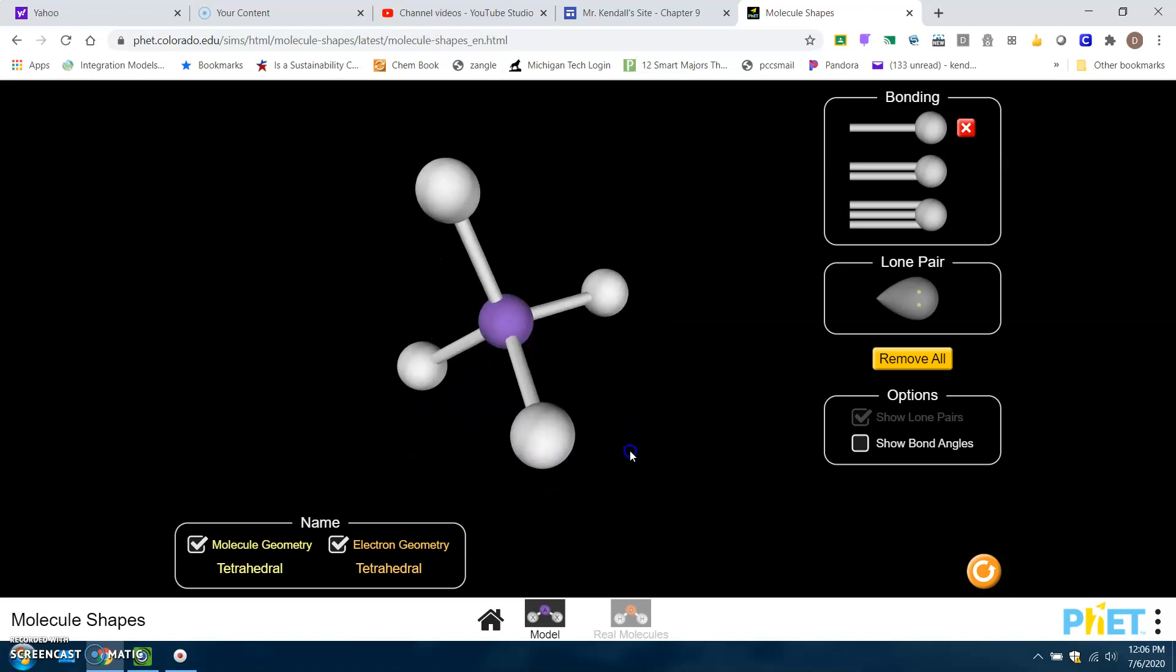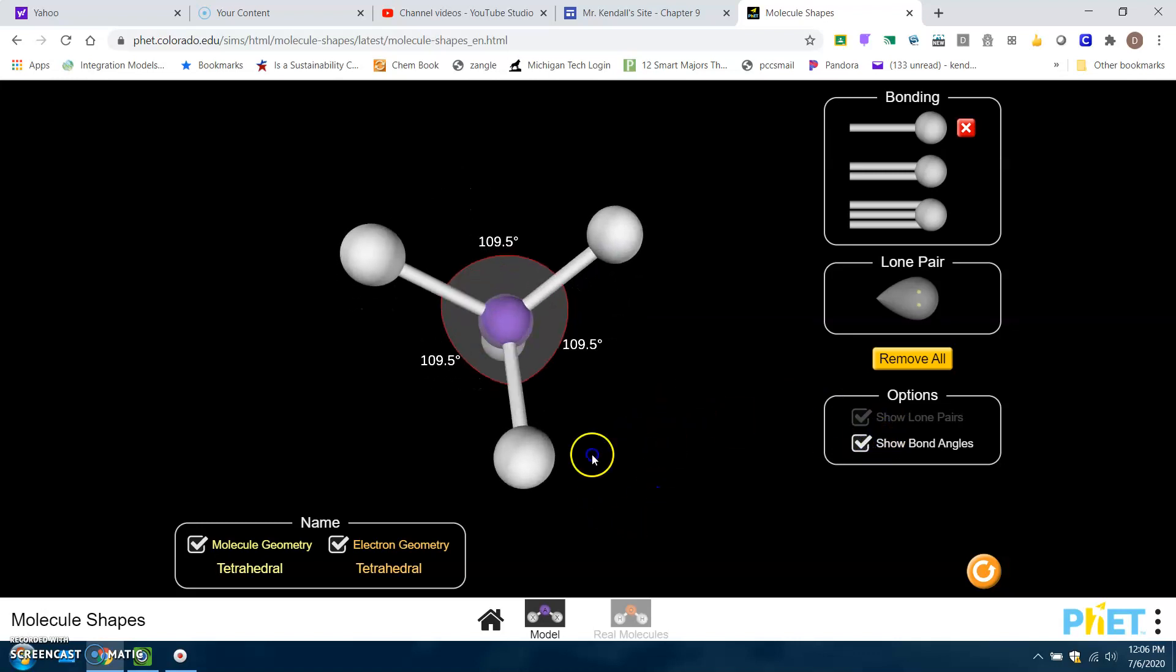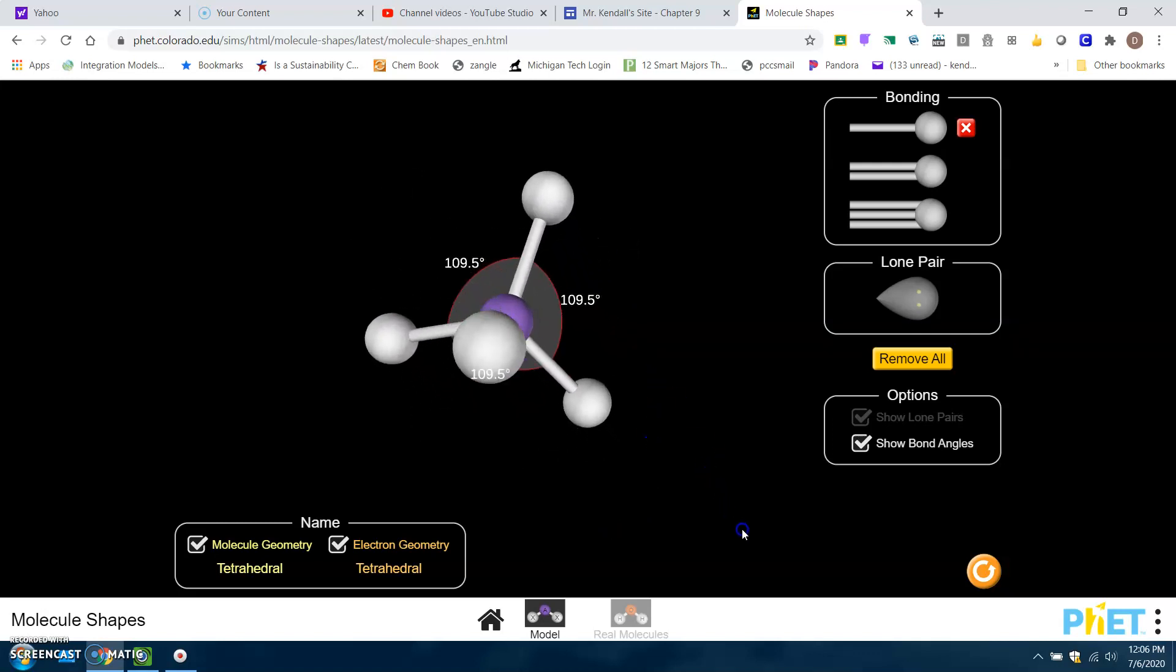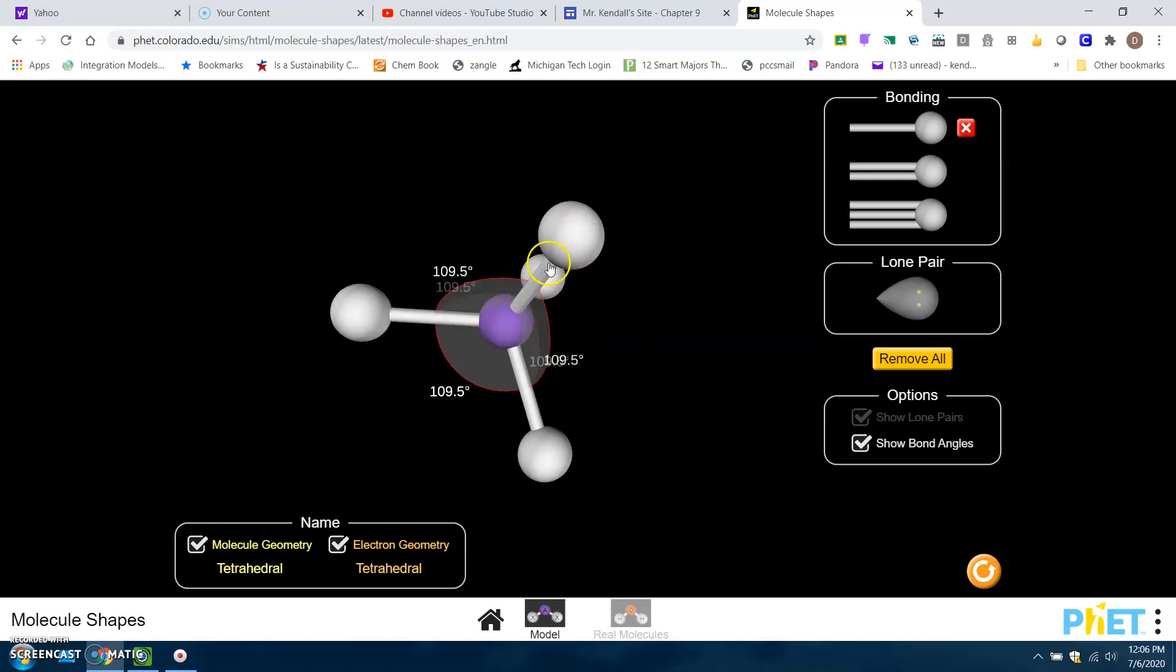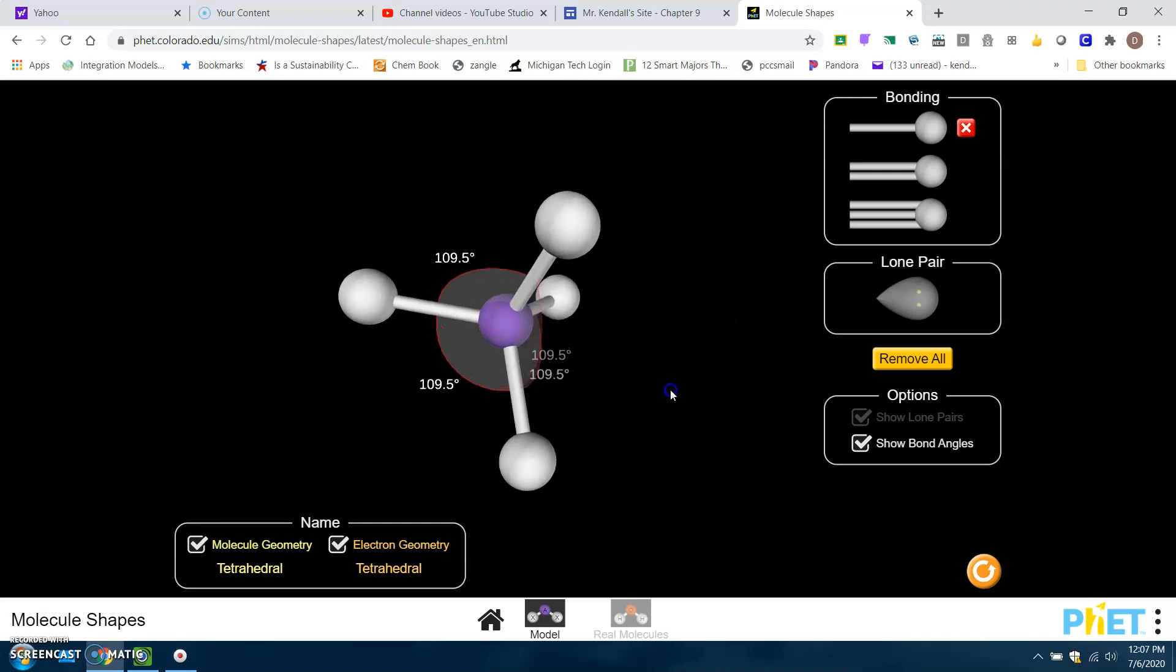So this is what's called tetrahedral. And then just so you know, this is the only number that you are supposed to memorize. So 109.5 would be the bond angle between any two parts, between any bonded pair of electrons and any other bonded pair of electrons is 109.5 degrees. Okay, so this is tetrahedral.